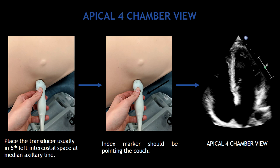The first view I'm going to show you is the apical four-chamber view. To obtain this view, first you have to place the transducer in the fifth left intercostal space at the median axillary line. The index marker should be pointing to the couch, and just by doing this you should be able to obtain the apical four-chamber view.